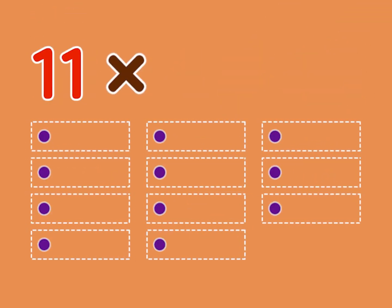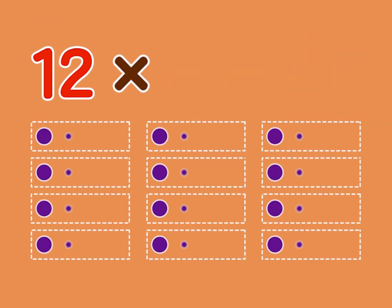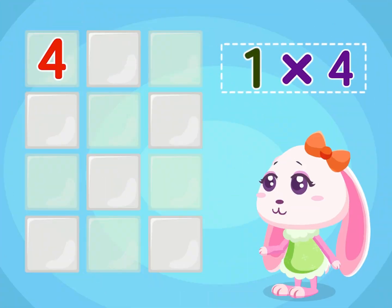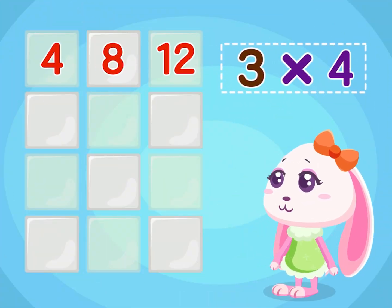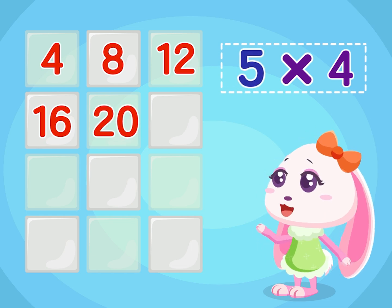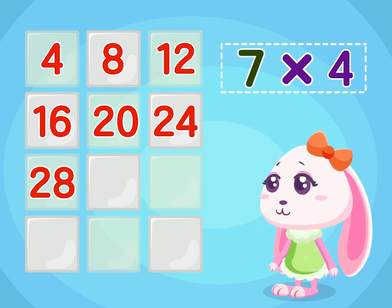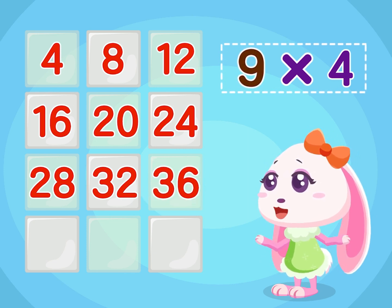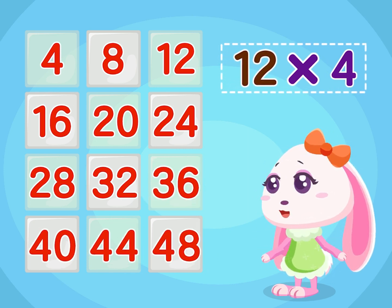9 times 4 is 36. 10 times 4 is 40. 11 times 4 is 44. 12 times 4 is 48. 4, 8, 12, 16 and 20. 24 and 28. 32, 36 and 40. 44 and 48.